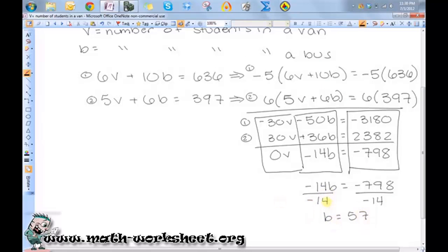So b is equal to 57. So now all I need to do is find v. And the way I'm going to do that is by substituting this b into either one of these original equations. Okay, now you want to make sure you always use an original equation in case you made a mistake somewhere. That way, you know, you won't have two mistakes.